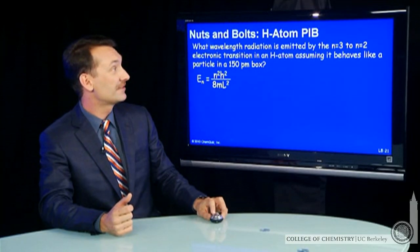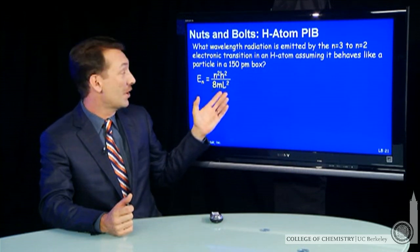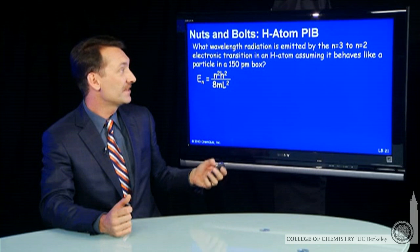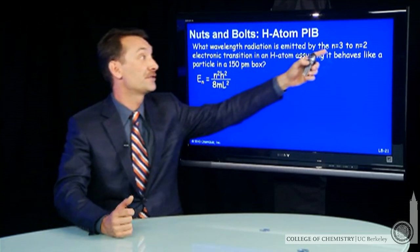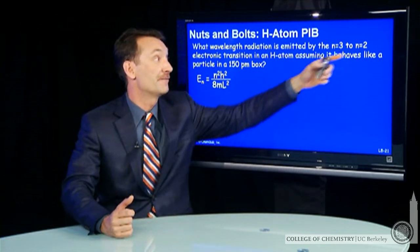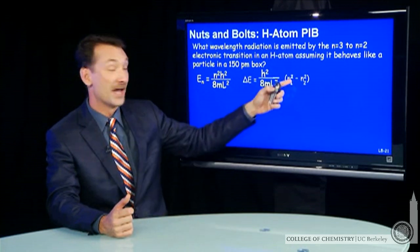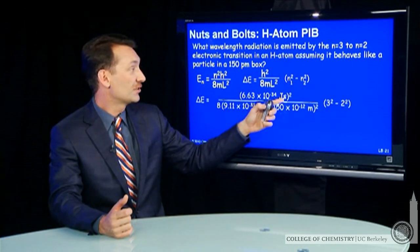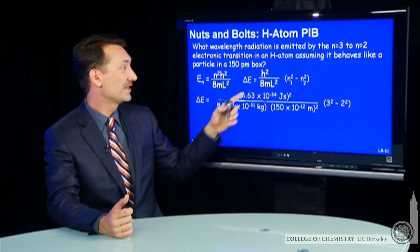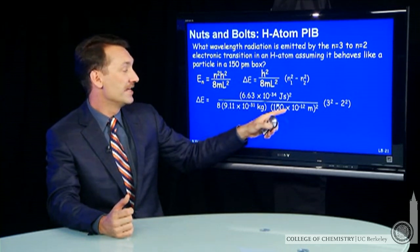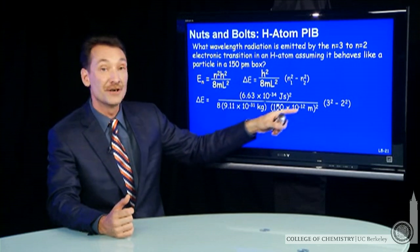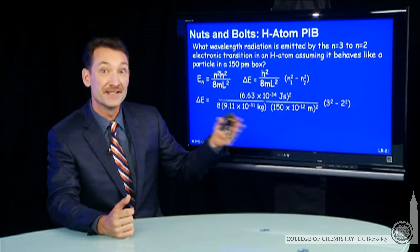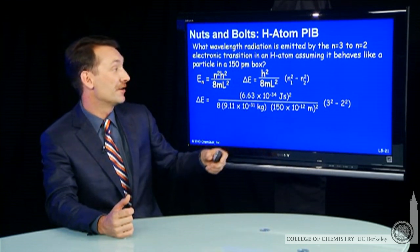150 picometer box, an electron mass that we know, n we know, h we know. We can simply say, well, if it's a transition, I have to subtract n=3 from n=2. I can do that. Let's put in those numbers, h squared, the mass of the electron, the length of the box. And again, I've changed picometers to meters. Always use meters, kilograms, and seconds, joules for energy.